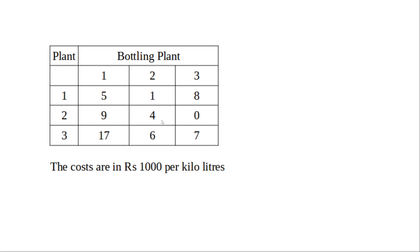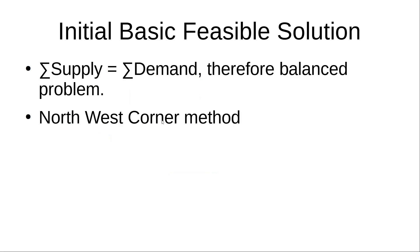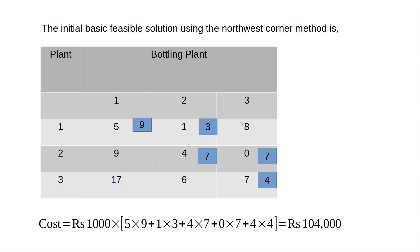To get the optimal solution, first we have to get the initial basic feasible solution. For that, we first check whether the problem is balanced — that is, whether the supply equals the demand, or whether the summation of the rows and the summation of the columns is equal. In this case it is equal, therefore it is a balanced problem. Now we use the northwest corner method — the link for this is given on the top — to solve this. The initial basic feasible solution using the northwest corner method is on your screen.